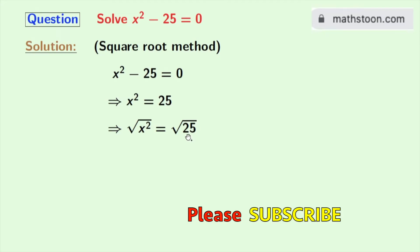As 25 can be written as 5 square, so we get square root of 5 square. Now from this equation, we get x is equal to plus minus 5.